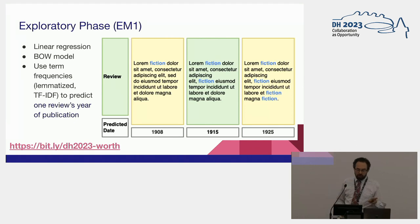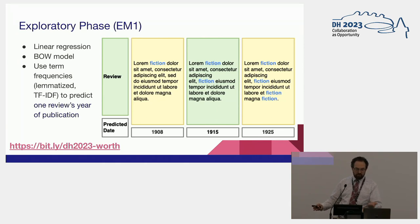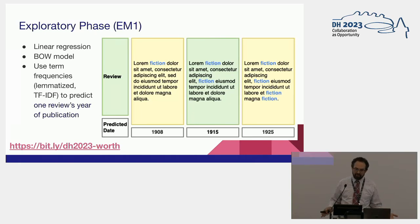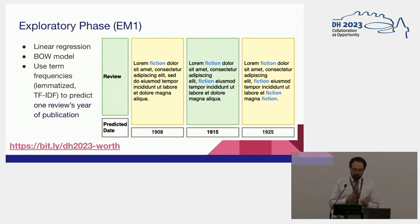The first model uses one review and the relative frequency of a term in that review to predict its date. For example, if the word fiction shows up once in a review in 1908, twice in 1915, and many more times in 1925, this would discover the word fiction as a predictor of a later date. The unit of analysis is one review, and we're looking for coefficients that predict earlier or later dates.